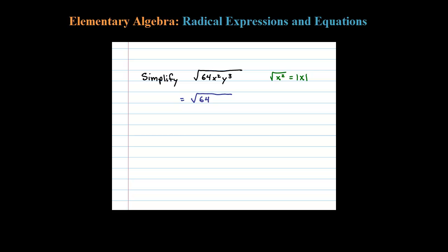I can rewrite this as 64x²y² times y. We can think of that as y² times y - we have y³ when we do that. Simplifying, the square root of 64 is 8 times the square root of x² is the absolute value of x.